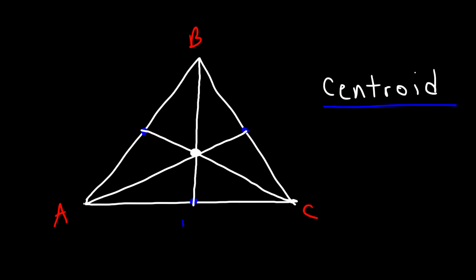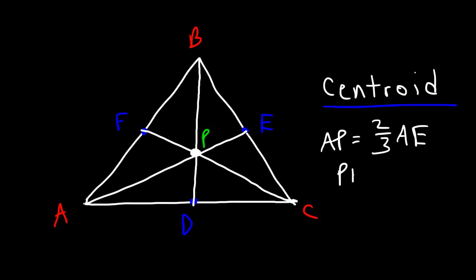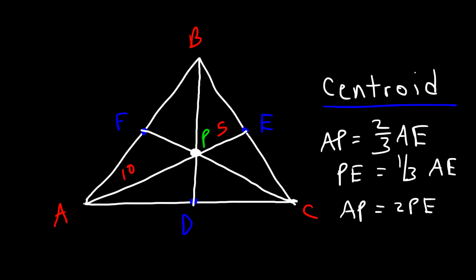Let's call the midpoints D, E, and F, and the centroid point P. It turns out that AP is two-thirds of AE, and PE is one-third of AE, and AP is twice the value of PE. So if PE is 5, AP is 10. If FP is 4, PC is twice the value: 8. If BP is 12, PD is half the value: 6.